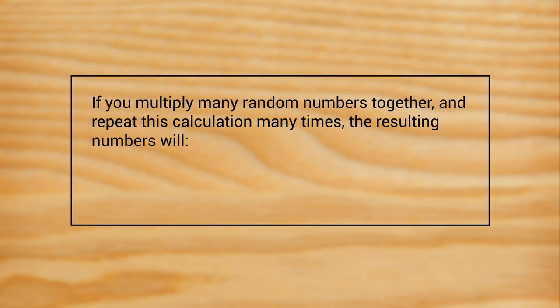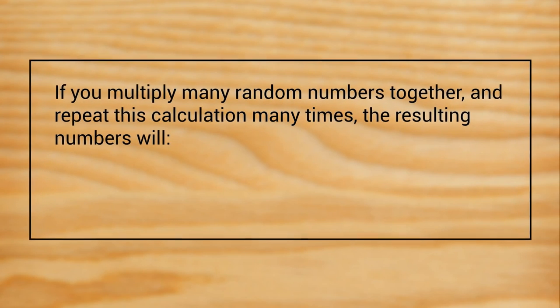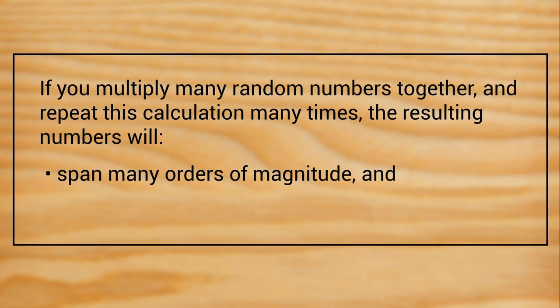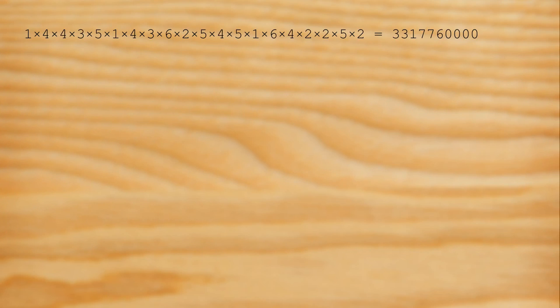If you multiply many random numbers together and repeat this calculation many times, the resulting numbers will span many orders of magnitude and obey Benford's Law. For example, if you roll 20 dice and multiply all the values together, you will get some number between 1 and 6 to the power of 20, which is more than 3 quadrillion, so that's quite a few orders of magnitude.